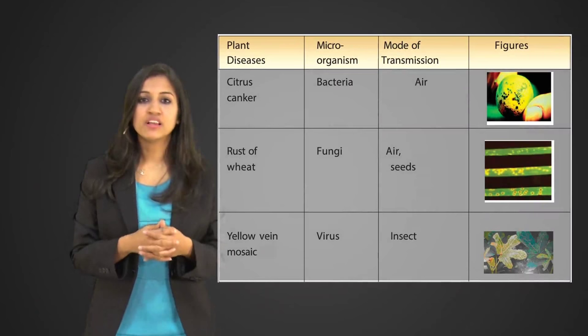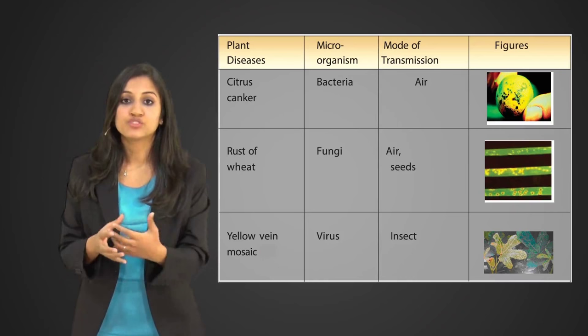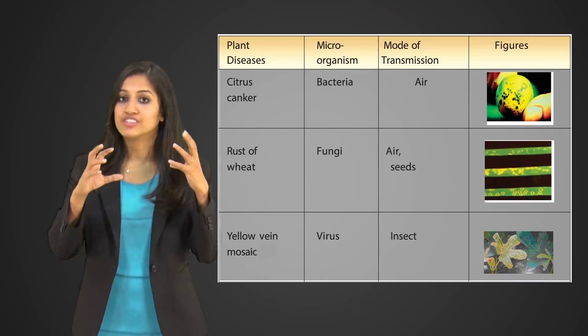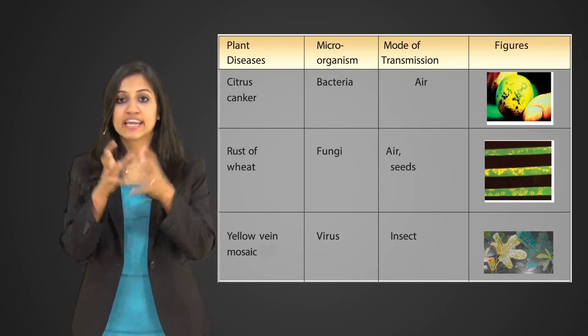You have citrus canker, which is caused by a bacteria and it spreads through air. And then you have the rust of wheat, which we spoke about, which is caused by a fungus. Again, it spreads through air and seeds. And then finally you have the okra plant, the mosaic vein of okra, which is caused by a virus. And again it spreads - and in this case it spreads through a whitefly, which is an insect which acts as a carrier and transfers the virus from one plant to the other.